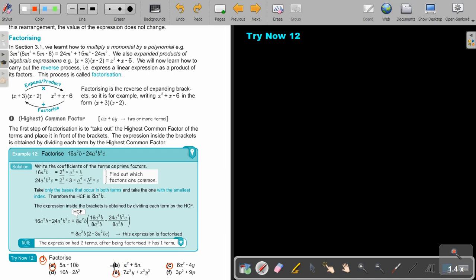I'm going to do it here on top. Let's start. Try now 12. If I start with the first one, number 1A. So, if I have 5A minus 10B. You can do this long process but you can already see it's just 5. Is there an A in both? No. Is there a B? No. So, it's just a number. And if I say 5A divide 5, I just get A. And I say negative 10B divide 5, I get negative 2B. And that will be the answer.